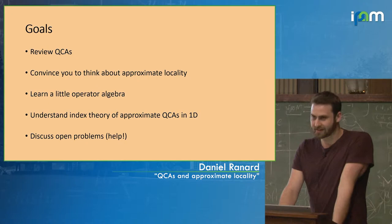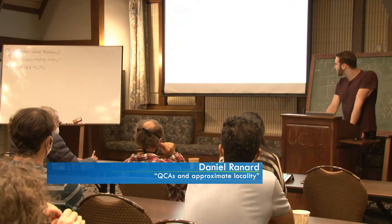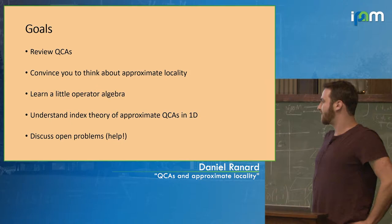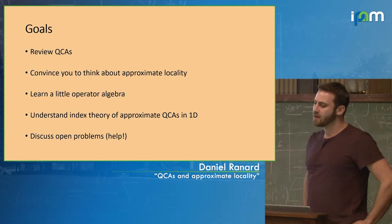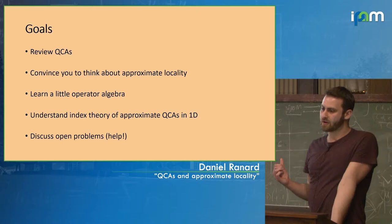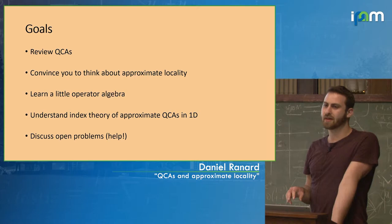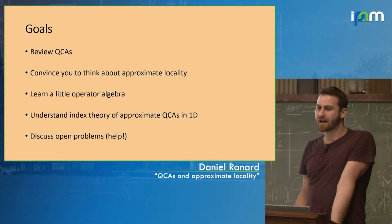First I'll review QCAs a little bit, just in case repetition helps if it's a new concept. Then I'll try to convince you to think about approximate locality. I'll talk about how physical Hamiltonian evolution leads to this fuzzy light cone that requires this approximate notion of locality. I want to suggest that even more generally, techniques for taking fuzzy locality and making it strict could be more broadly applicable.